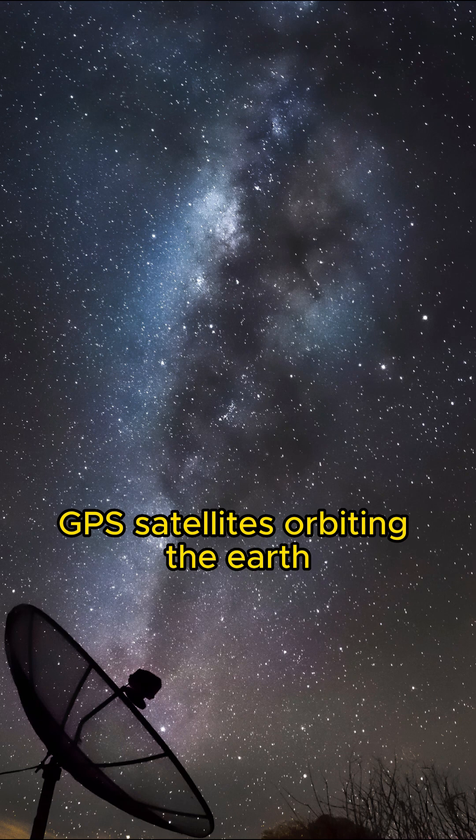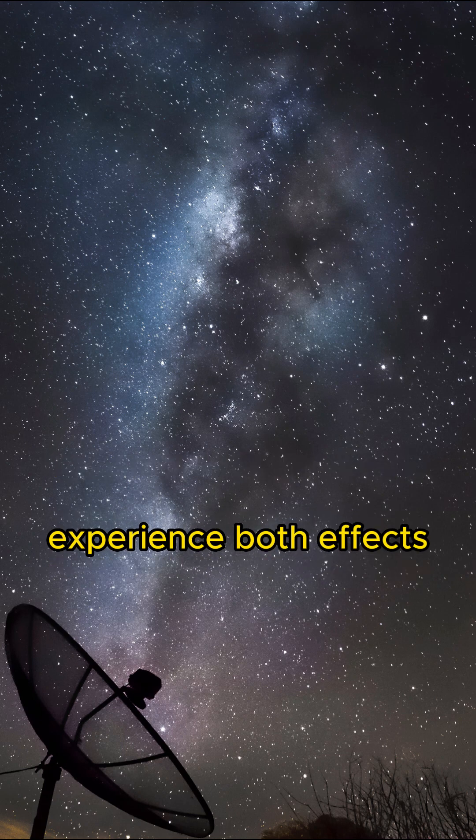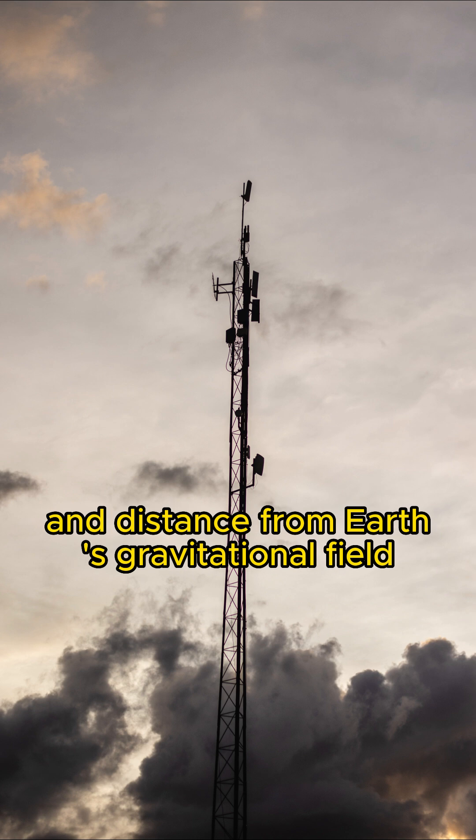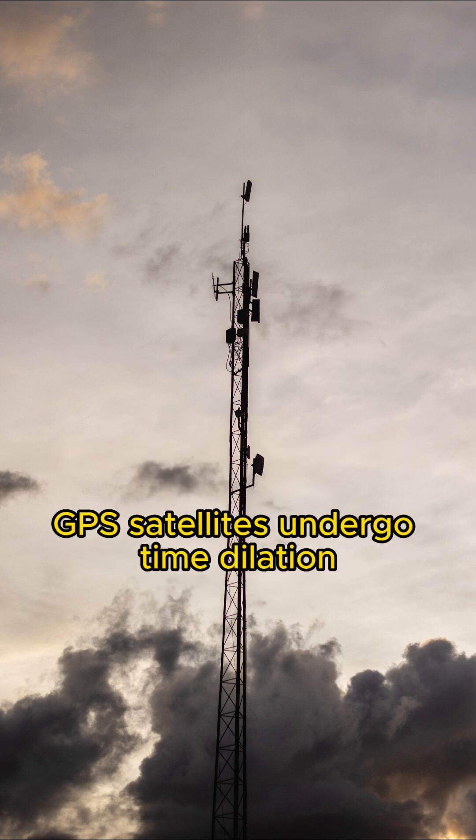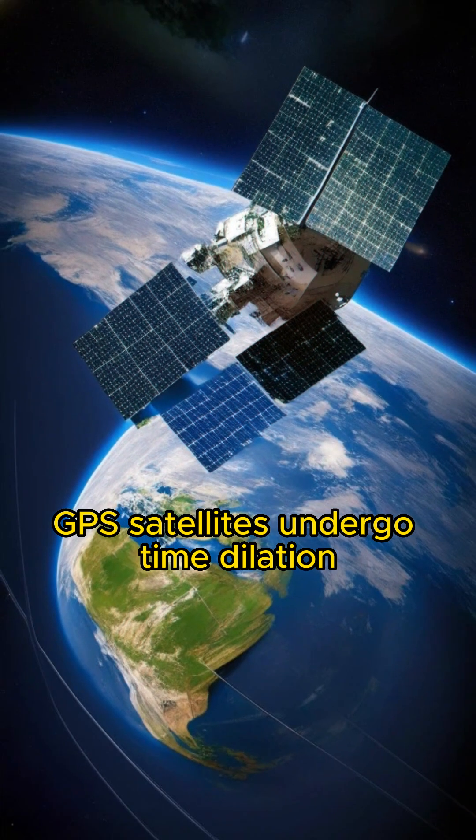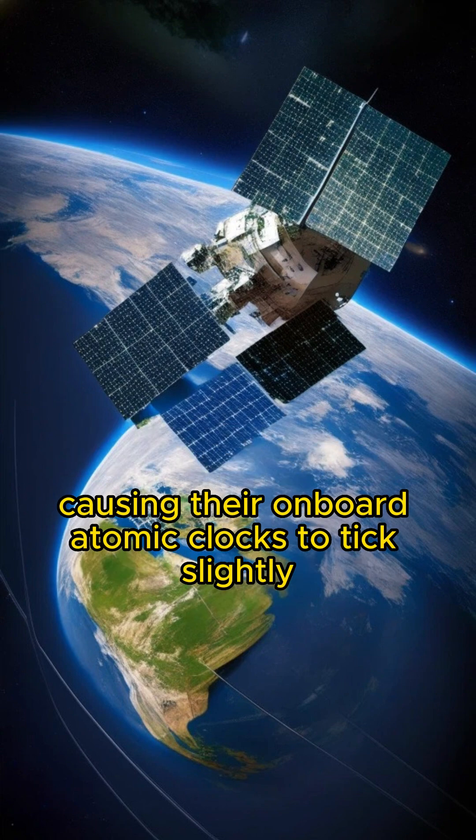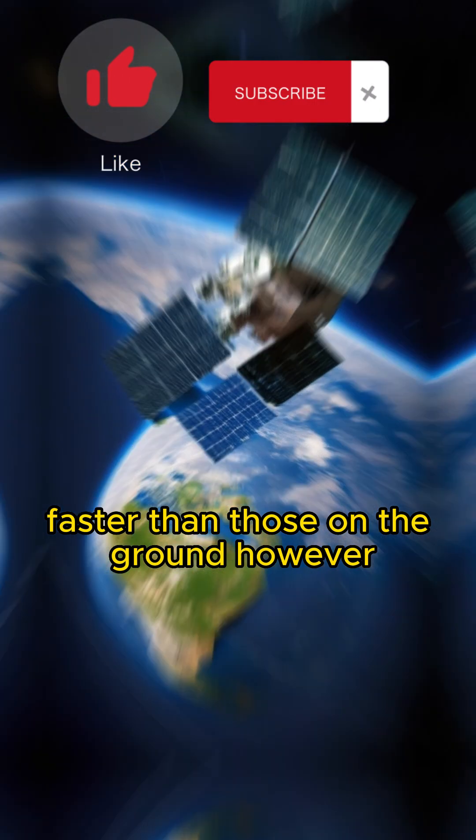GPS satellites orbiting the Earth experience both effects. Due to their high velocity and distance from Earth's gravitational field, GPS satellites undergo time dilation, causing their onboard atomic clocks to tick slightly faster than those on the ground.